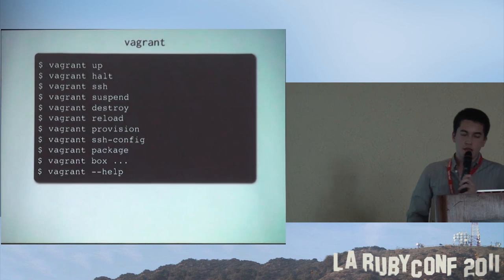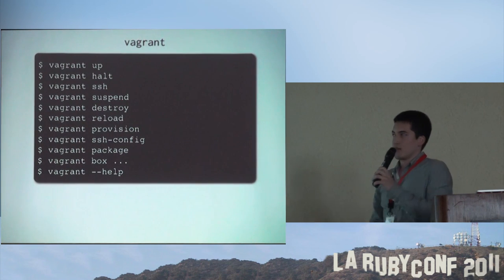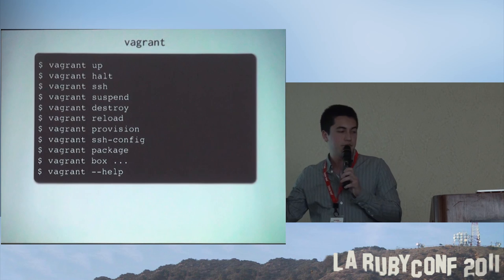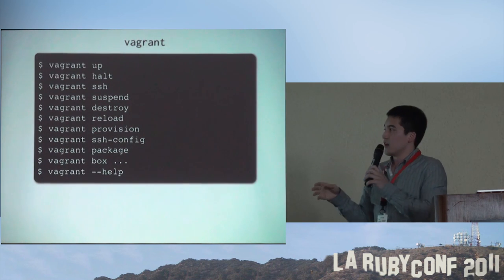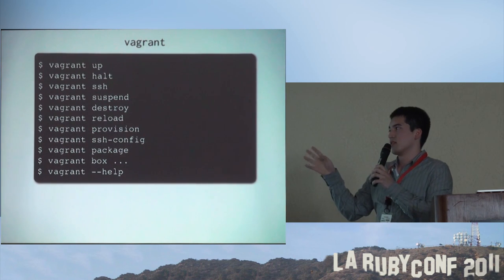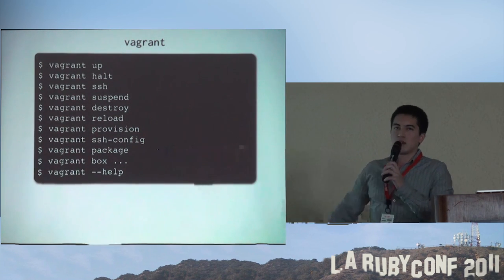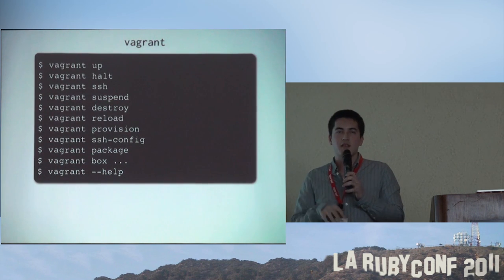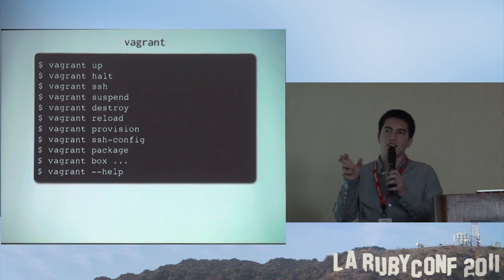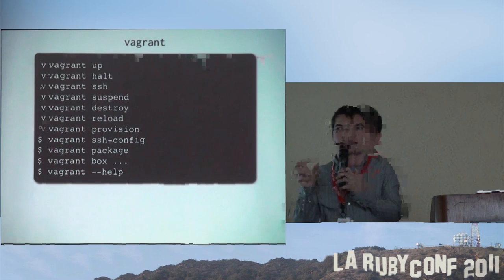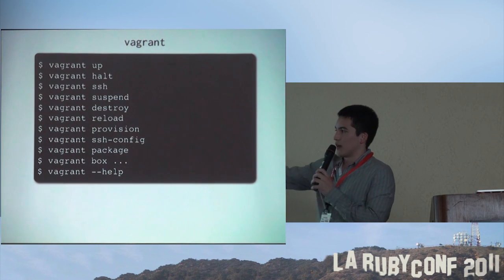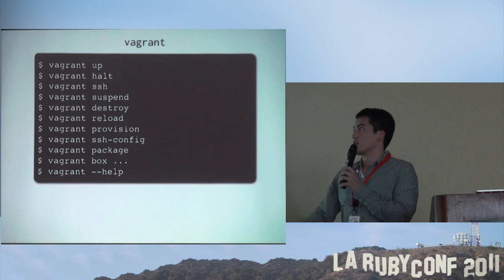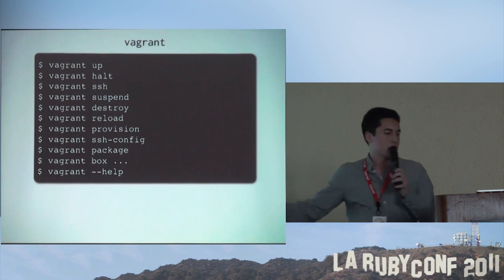The Vagrant command line tool has a git-style interface - you give it the vagrant binary and then the task you want it to do. Commands include things to spin out machines, provision them, SSH into them, and a few more. You can run vagrant --help to see all of them.